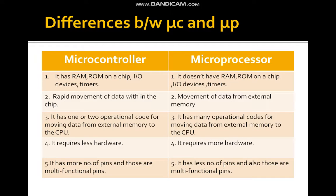A microcontroller requires less hardware, whereas a microprocessor requires more hardware to connect external memory. A microcontroller has more number of pins and those are multifunctional pins — meaning one pin can perform 2 or more functions depending on the given commands. A microprocessor has fewer pins, and those are also multifunctional pins.